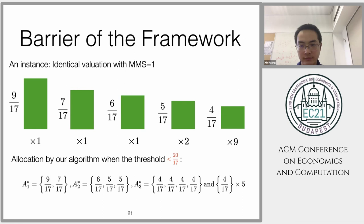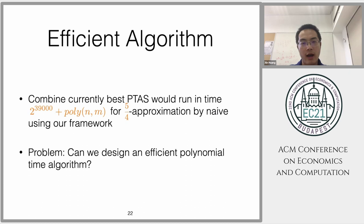Another problem is that we only prove the existence result. If we combine with PTAS, then even to get the 5/4 approximation, the time is irrational. The natural question is how we can define an efficient polynomial algorithm.